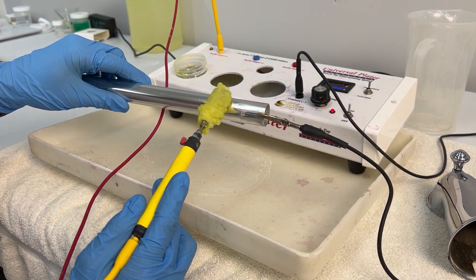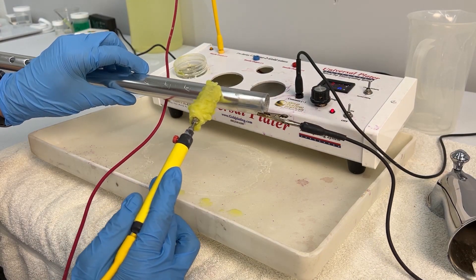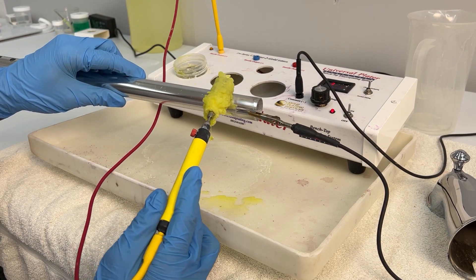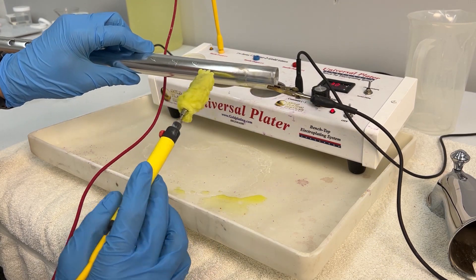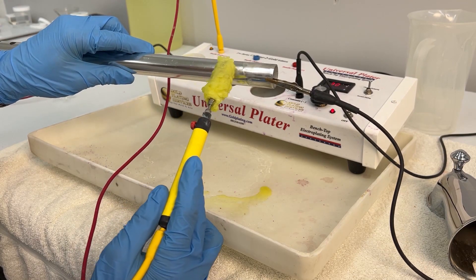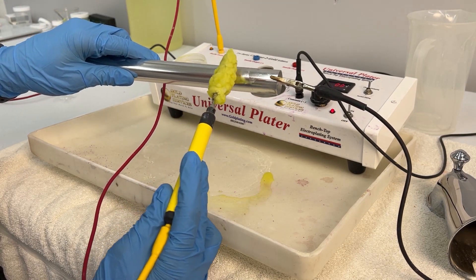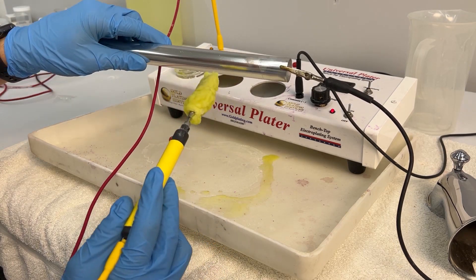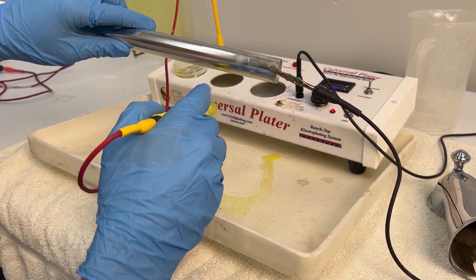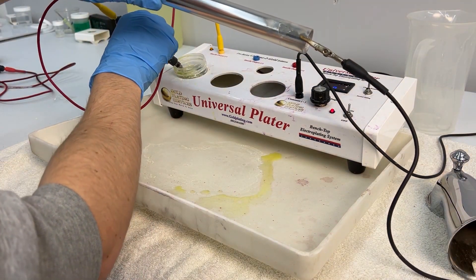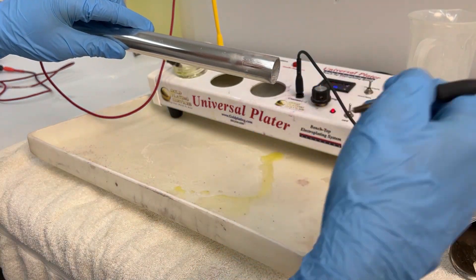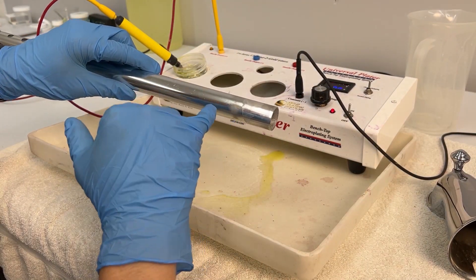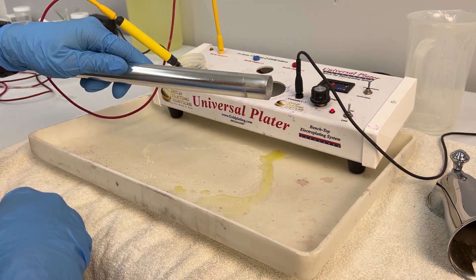You can see it's corroding already right here and it's not really stripping anything off because it is aluminum and it's corroding it. So that's how you can tell if it's aluminum if your solution is a little milky white color and it is corroding the aluminum.